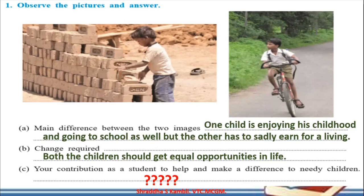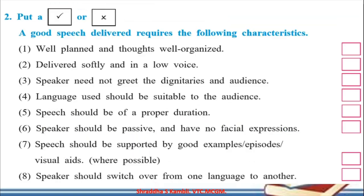That was part one of our warming up activity. Let's go to part two. We are not only going to discuss social issues; we are also going to talk about how to prepare and deliver a good speech. You are supposed to put a right tick or a wrong tick to see which points are correct for a good speech and which are not. There are eight points to evaluate.